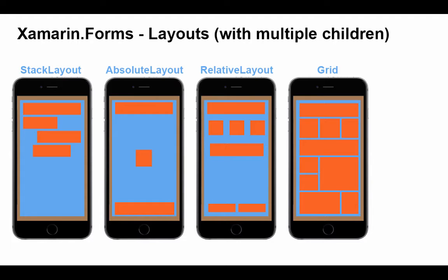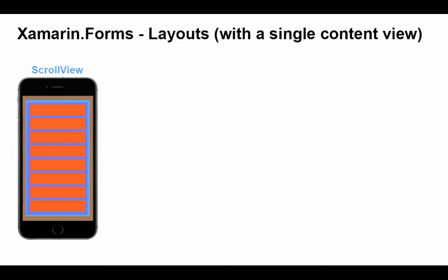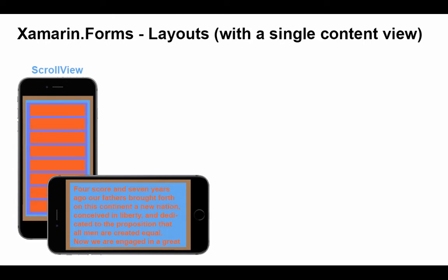The height of rows and width of columns can be specified or they can be relative. Then we have layouts that contain just a single child view. The most common of these is a scroll view, which adds scroll properties. That single content view might be something like a stack layout, which could then contain multiple objects. Scroll views are also often used for text — if we have a large body of text that doesn't all show up on the screen at once, we can place that text object in a scroll view.